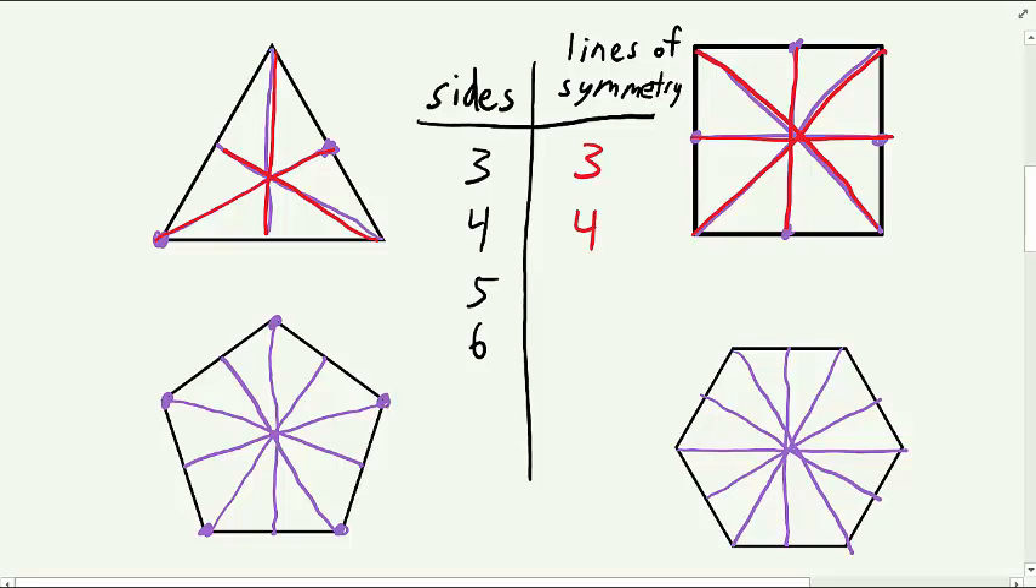The regular pentagon had five lines of symmetry. And the regular hexagon had six lines of symmetry.